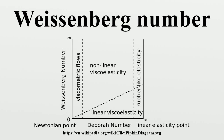The Weissenberg number is a dimensionless number used in the study of viscoelastic flows. It is named after Carl Weissenberg. The dimensionless number compares the viscous forces to the elastic forces. It can be variously defined, but it is usually given by the relation of stress relaxation time of the fluid in a specific process time.